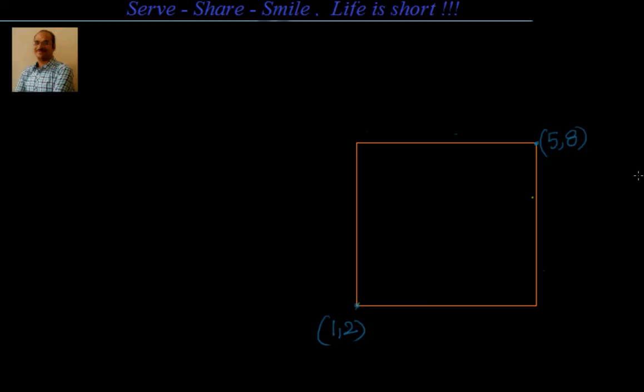Hello friends, welcome back, hearty welcome to you. In this session let's look at one interesting example related to straight lines. We have been given two vertices of a square, they are (1,2) and (5,8). We have to find out the remaining two vertices, and also the equations of the four sides of the square.